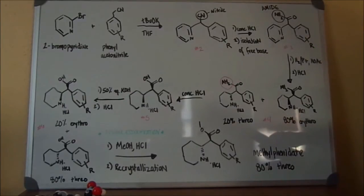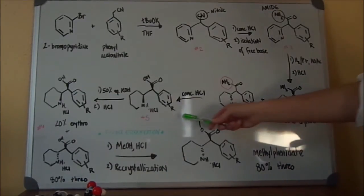Number three undergoes platinum-catalyzed hydrogenation, which removes the double bonds from the pyridine ring. Number four is then treated with concentrated HCl to eliminate the amide functional group, and produce structure number five.